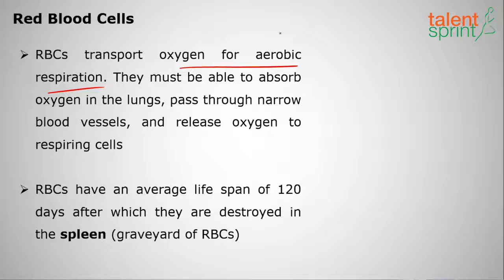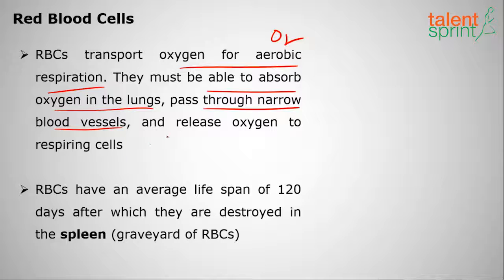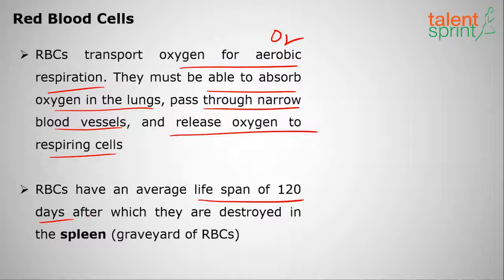RBCs transport oxygen for aerobic respiration. They absorb oxygen in the lungs, pass through narrow blood vessels, and release oxygen to the respiring cells. RBCs have an average lifespan of 120 days, after which they are destroyed in the spleen, which is called the graveyard of RBCs.